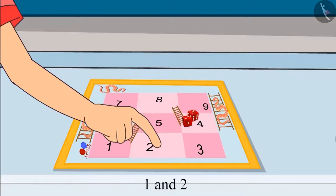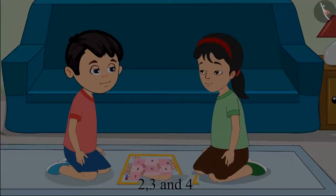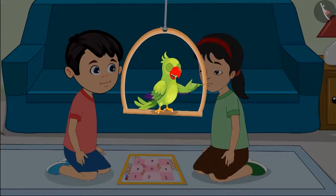1 and 2, that's the number on the first dice. 2, 3 and 4. Do you think Chotu's method to add the numbers is correct? Come on, let us look at this carefully.